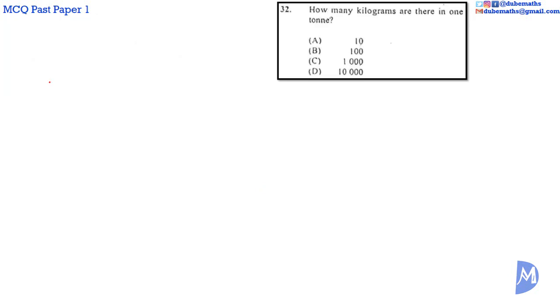Question 32. There are 1,000 kilograms in one ton. The answer is C.